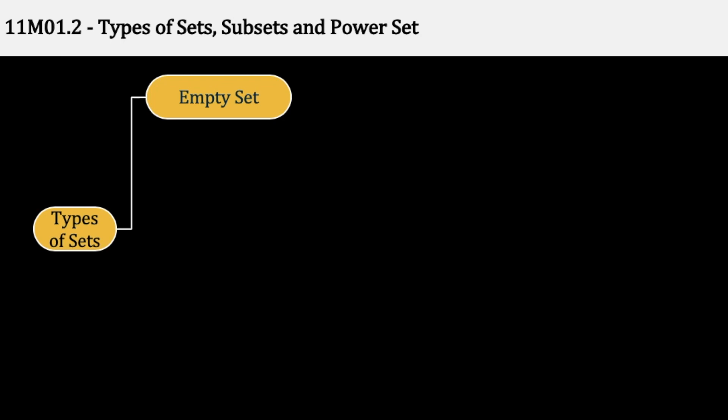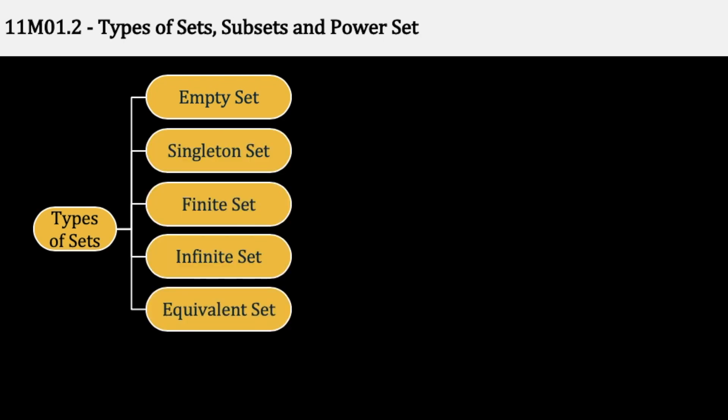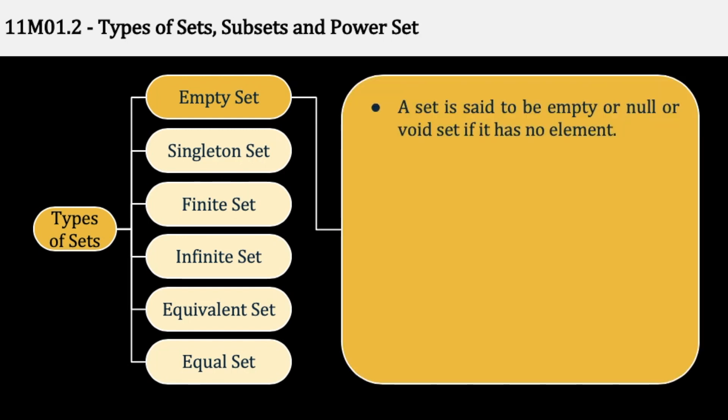Topic 2: Types of sets, subsets and power set. Sets कई प्रकार के होते हैं: Empty set, Singleton set, Finite set, Infinite set, Equivalent set, Equal set. सबसे पहले हम देखेंगे Empty set क्या होता है। As the name suggests, a set is said to be empty or null if the set has no element. इसको void set भी कहते हैं।